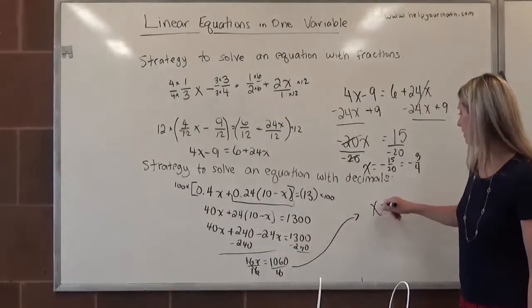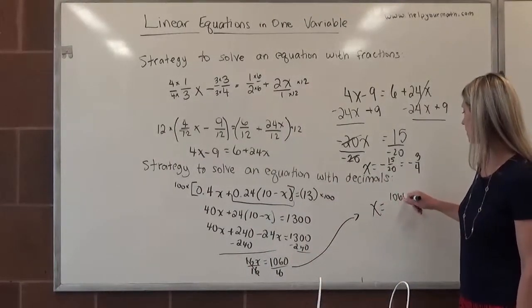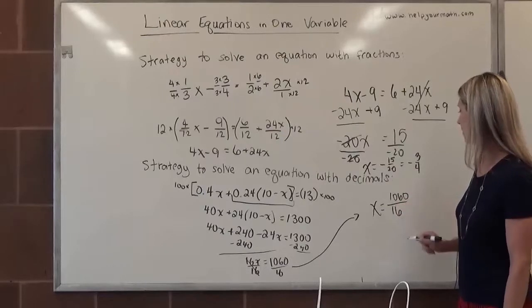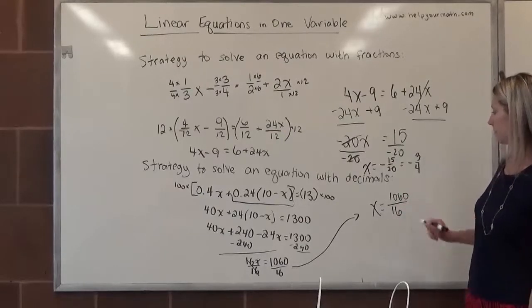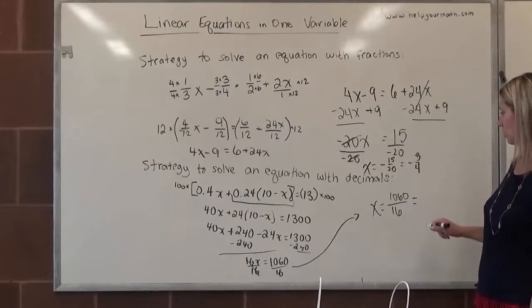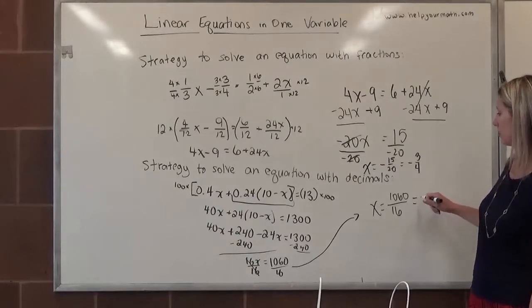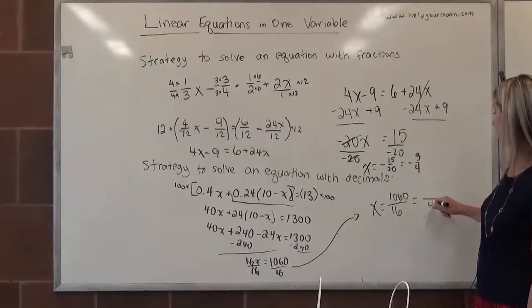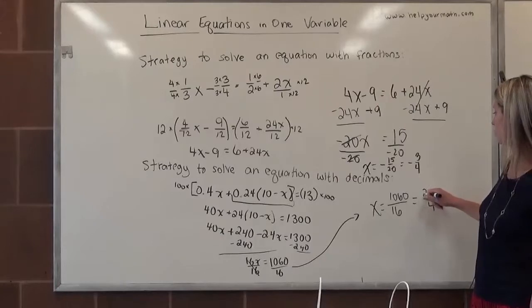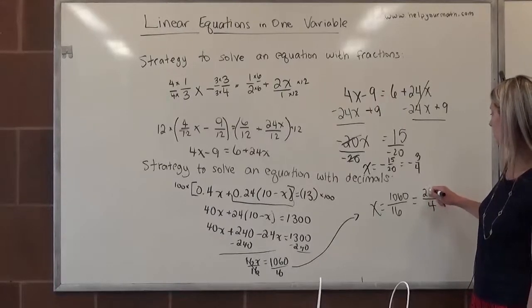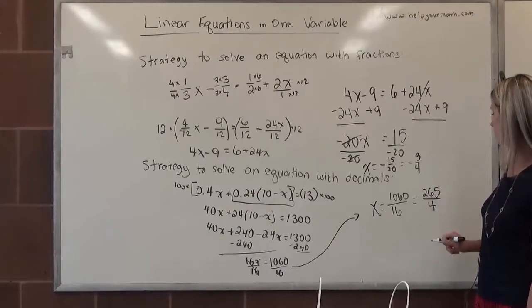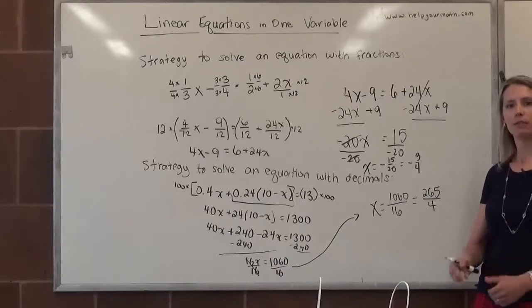We have x equals 1,060 over 16, which can be simplified by dividing both sides by 4. That would give us 265/4.